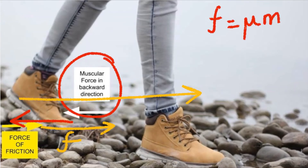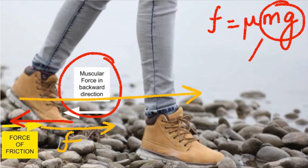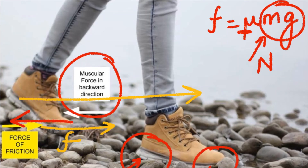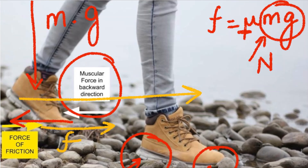Let us also discuss the formula for friction. Frictional force is equal to μ into m into g, where m into g is the normal force, and μ is the coefficient of friction at the point of contact between the shoe and the ground. Here, m is the mass of the object and g is the acceleration due to gravity.